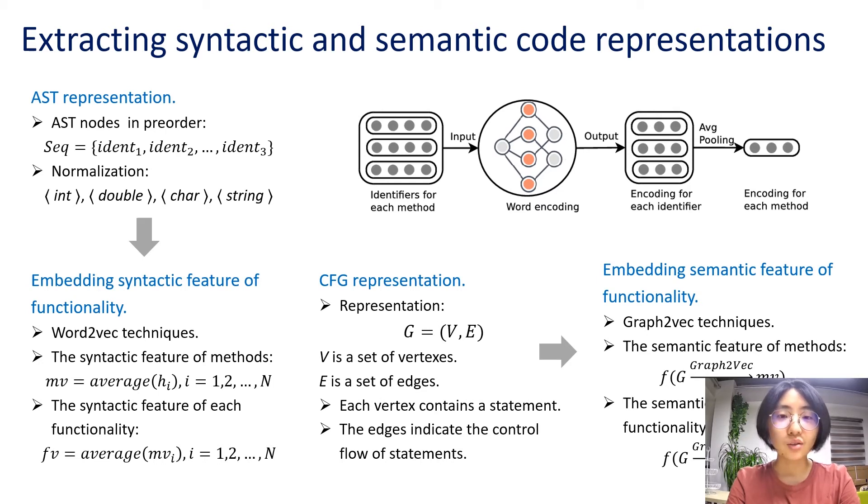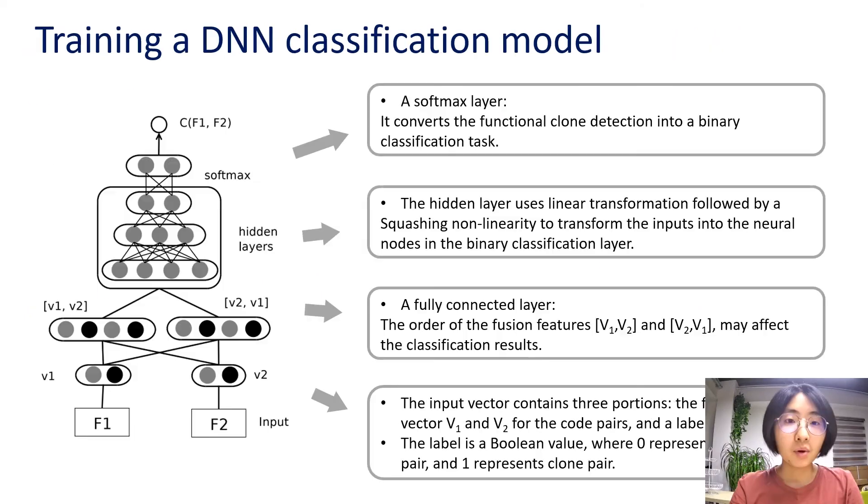As for semantic representation, we extract the CFG of each method. It is a directed graph with a set of vertex and edges. Then we apply graph2vec, a graph embedding technique to generate the corresponding feature vector. For the methods with calling relationship, we first connect the corresponding CFG, which has been explained before, and then apply graph2vec on it.